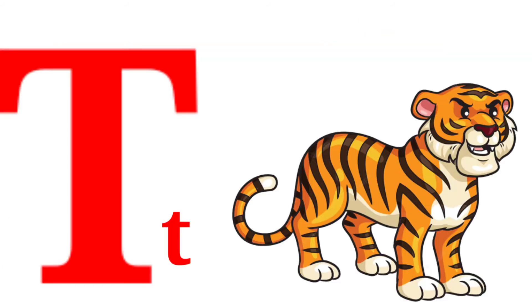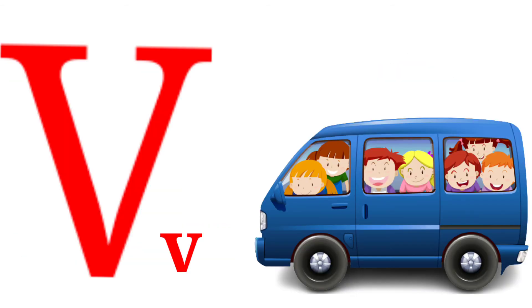Q for green, R for rose, S for sun, T for tiger, U for umbrella, V for lamb.